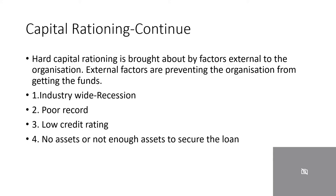Hard capital rationing is brought about by factors external to the organization. External factors preventing the organization from getting funds include: one, an industry-wide recession; two, having a poor record; three, having a low credit rating; four, having no assets or not enough assets to secure the loan.